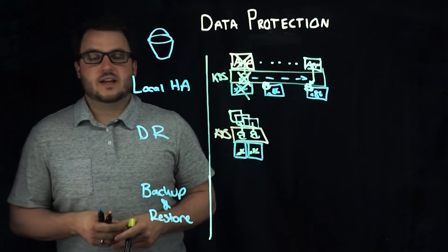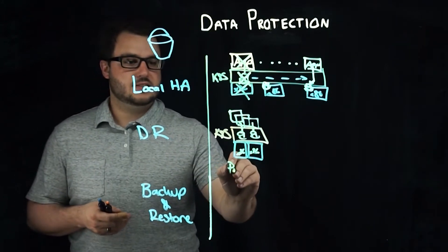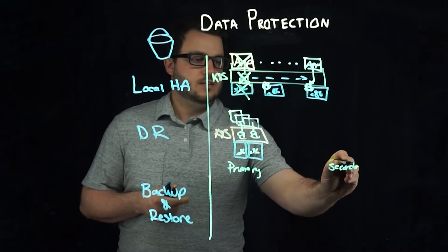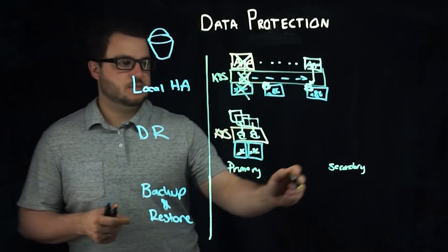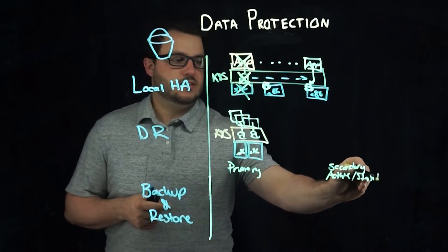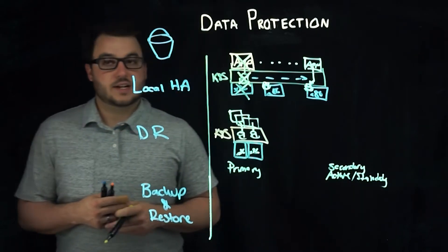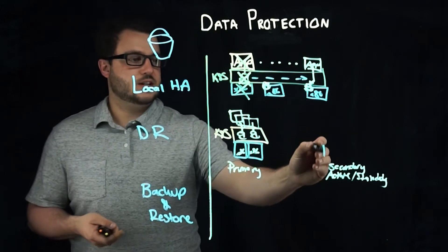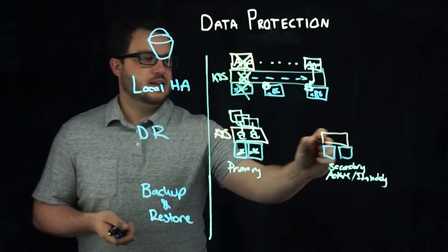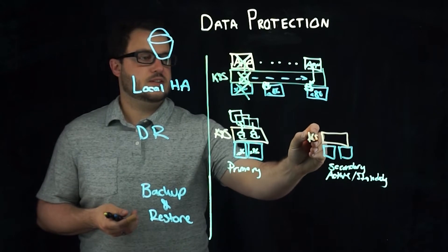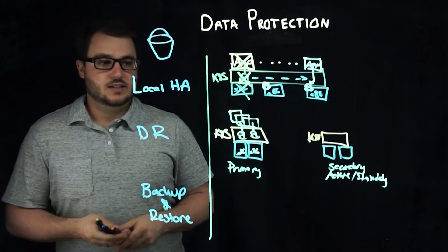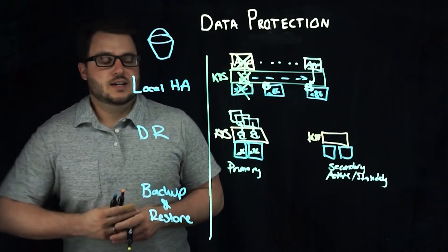Now for disaster recovery there's typically a primary site. So we'll call this the primary and there is a secondary. Secondary is more generic, so it can be sort of an active-active secondary or a standby secondary. So again, you have a whole other cluster over here basically waiting as an active or standby cluster ready for disaster to strike at the kind of cluster or data center layer from the primary.